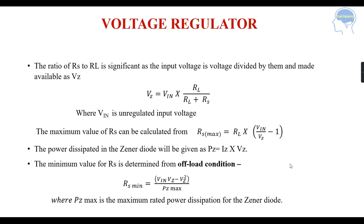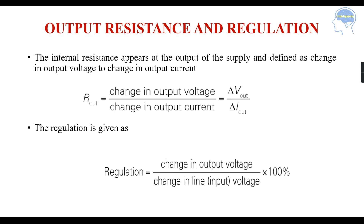The power dissipated in the Zener diode is given as P equals Iz times Vz, where Iz is the Zener current and Vz is the Zener voltage. The minimum value of RS is determined from the off-load condition: RS minimum equals (Vin minus Vz) divided by (Vz squared divided by Pz maximum), where Pz maximum is the maximum rated power dissipation. The output resistance is defined as the change in output voltage divided by the change in output current, and regulation is (delta Vout divided by delta Vin) times 100%.